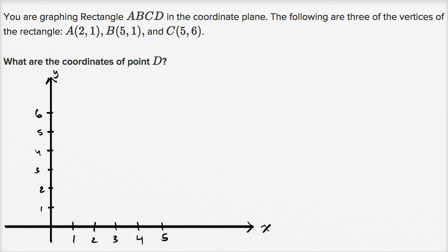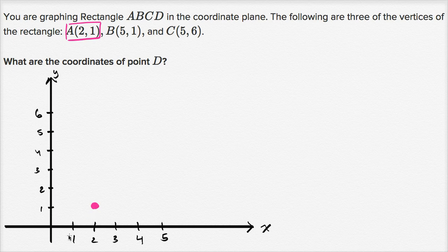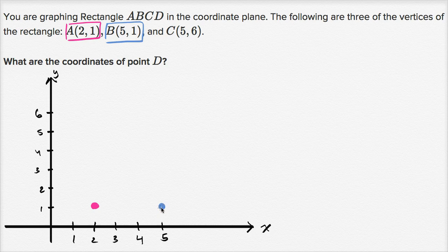Now let's plot the points. So let's first plot point A, which is at two comma one. X equals two, y is equal to one, so that's that point right over there. Now let's plot point B. Point B is at five comma one. So x equals five, y is equal to one. That's right over there.